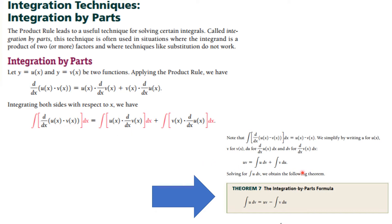So you have this, and if you solve for the integral of u dv, you will get the formula for Integration by Parts. This is the thing you want to memorize: the integral of u dv is equal to uv minus the integral of v du.